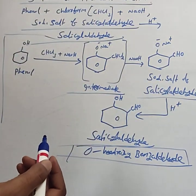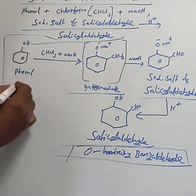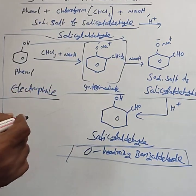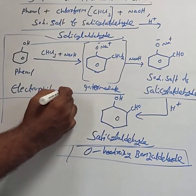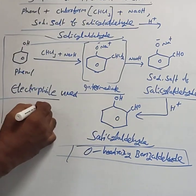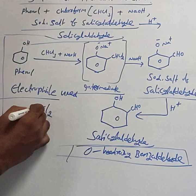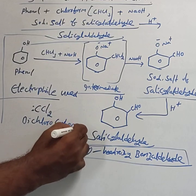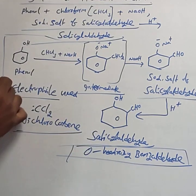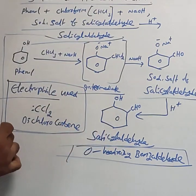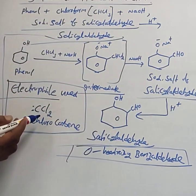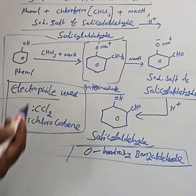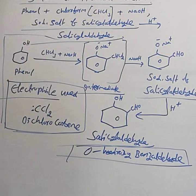For the competitive point of view, you have to know that the electrophile used repeatedly in competitive exams for the Reimer-Tiemann reaction is dichlorocarbene (CCl2). They ask: 'What is the electrophile used in the Reimer-Tiemann reaction?' The answer is dichlorocarbene. This is a very important point. The Reimer-Tiemann reaction is also one of the electrophilic substitution reactions.